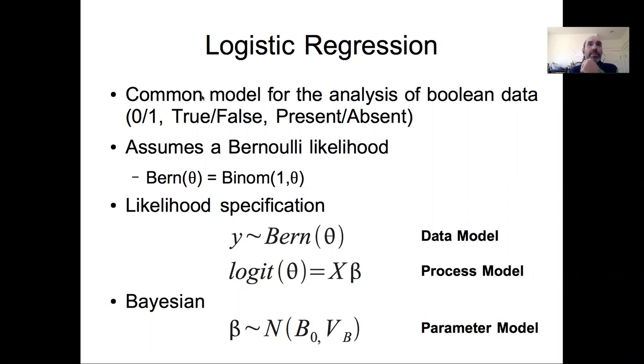As a reminder, logistic regression is a common model when analyzing Boolean data—zero-one, true-false, present-absent sort of data—where we assume a Bernoulli likelihood, which is the special case of the binomial with a sample size of one, and we assume a logit link between the linear model and the probability in the Bernoulli. For the Bayesian version, we need to put priors on our betas.